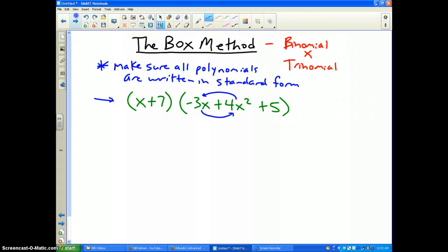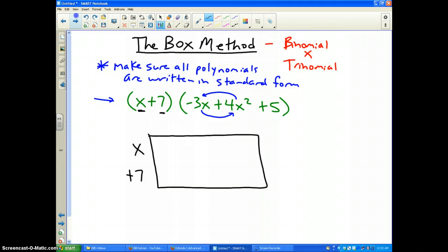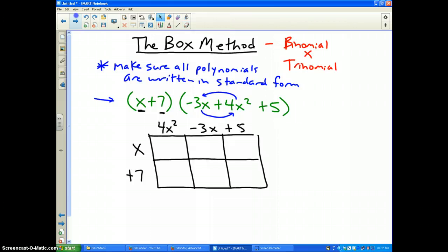And basically how the box method works is, you notice that there are two terms here, so I'm going to write this vertically, (x+7). And I'm going to draw a box to fit how many terms there are. There are two terms in the first polynomial, and in the second term there are three terms, which is 4x² - 3x + 5. And I draw my lines of my boxes to indicate how many terms there are. There are three terms in this polynomial, and there's two in that one, so I have six total terms that I will have after I multiply.